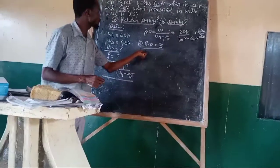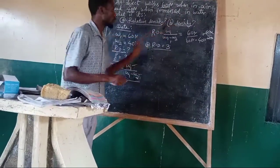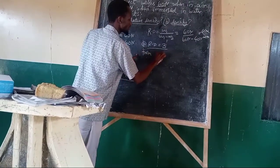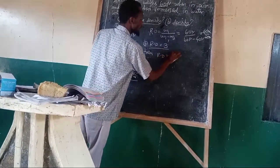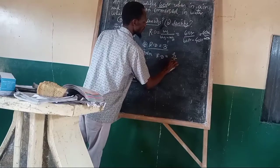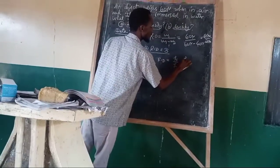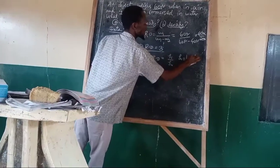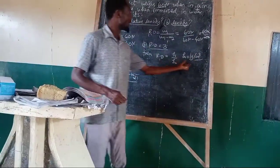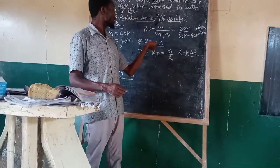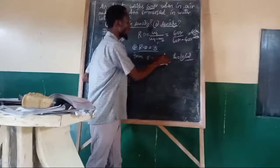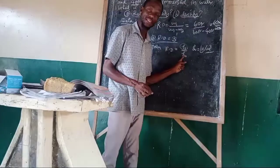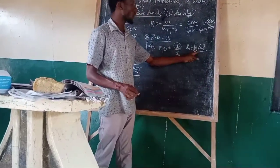But what if we are looking for the density of a substance? Relative density is equal to density of a substance over density of water. The density of water is a constant: 1 gram per centimeter cubed.